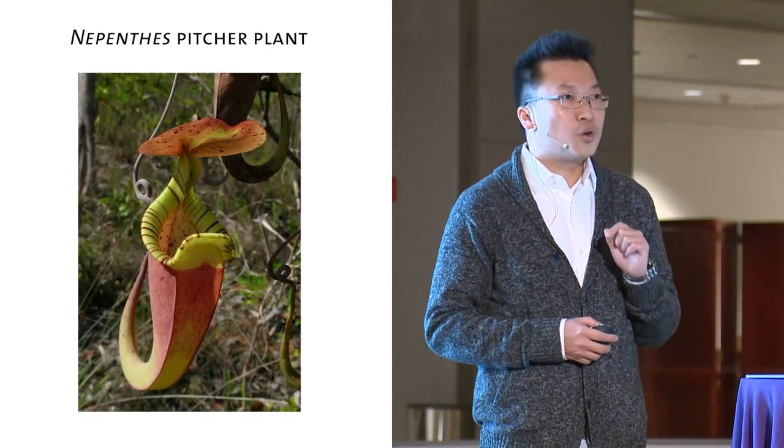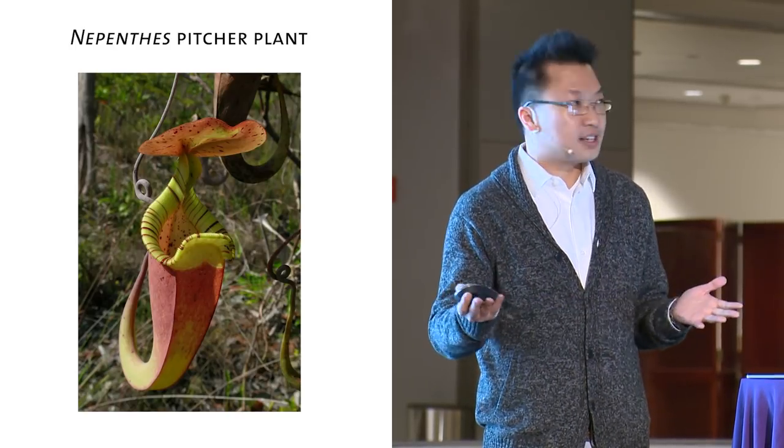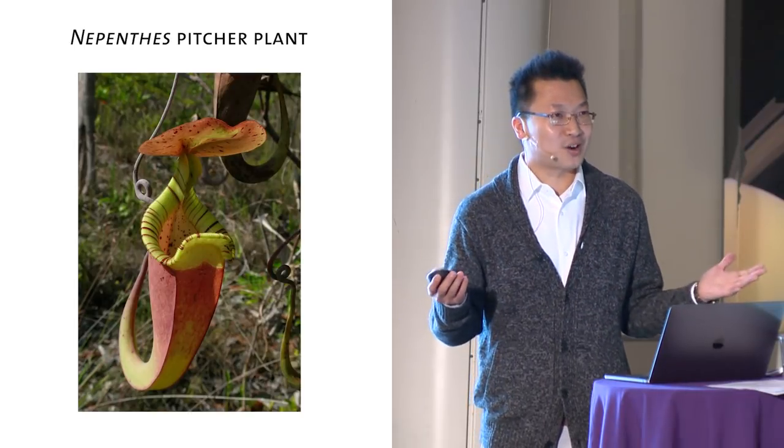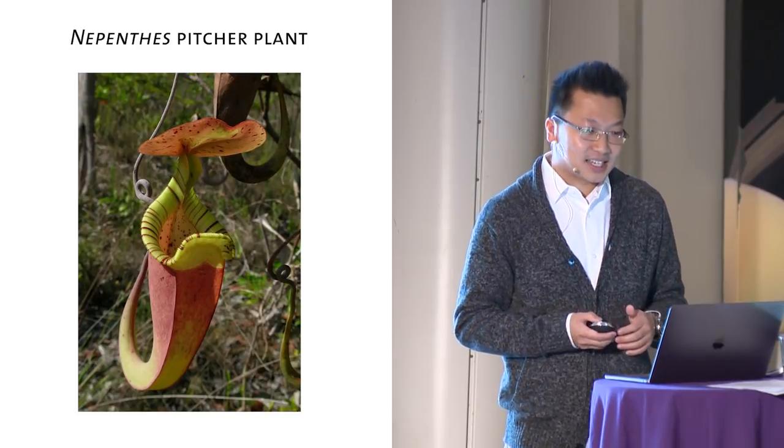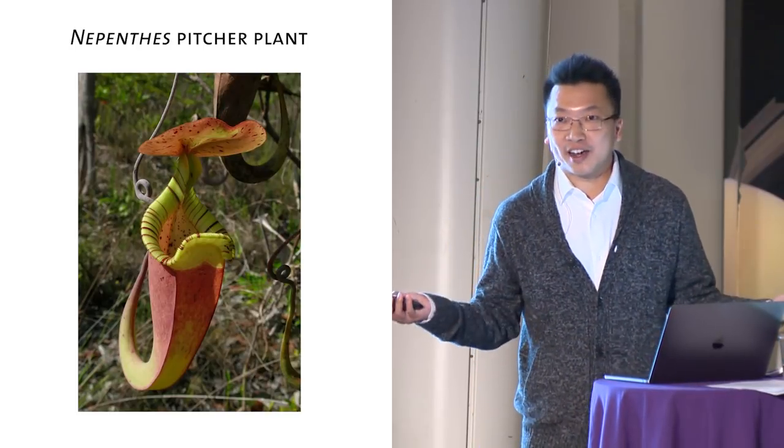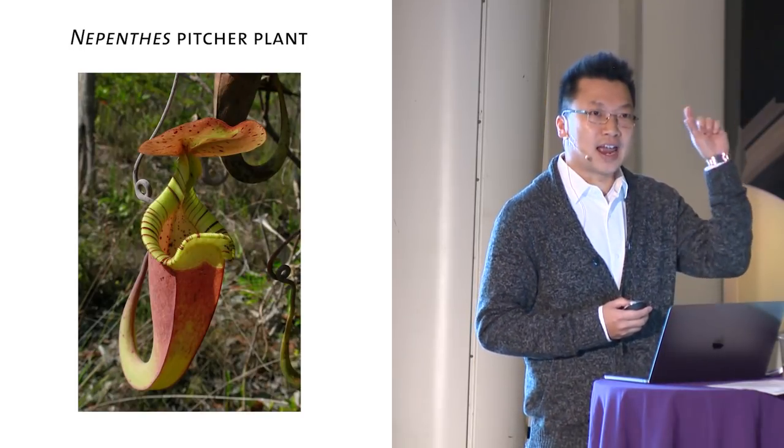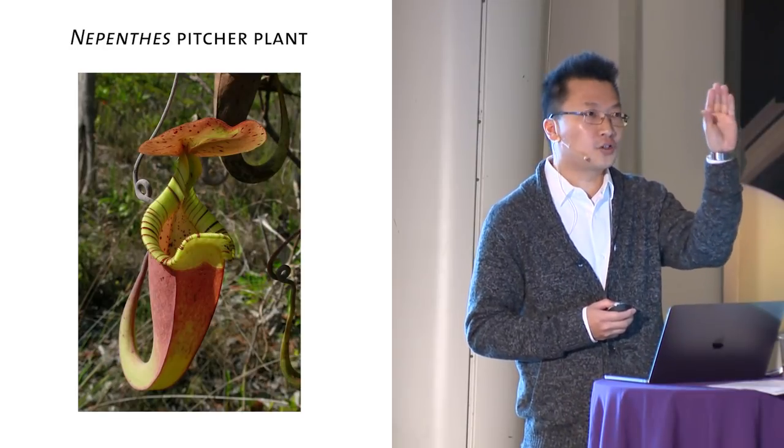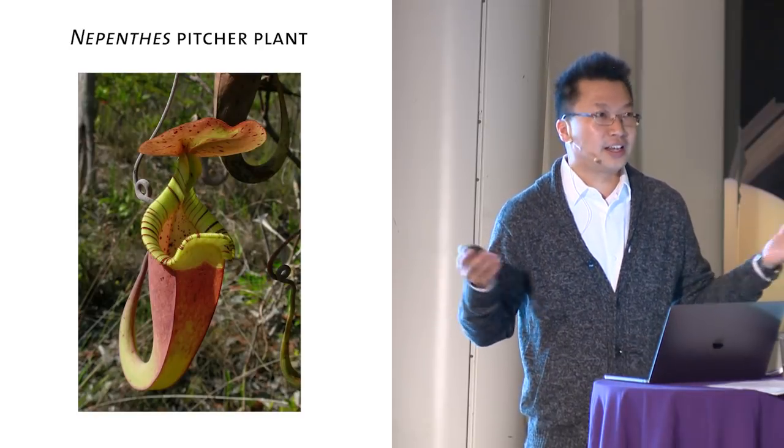But not this specific plant. What you're looking at here is a Nepenthes pitcher plant. The reason why it is called pitcher plant is because its shape looks like a pitcher. And it is also a carnivorous plant, meaning that it eats insects. But unlike Venus flytrap, which has an active movement to capture insects, like a mouth that opens and closes, this pitcher plant just sits there. It doesn't move at all.